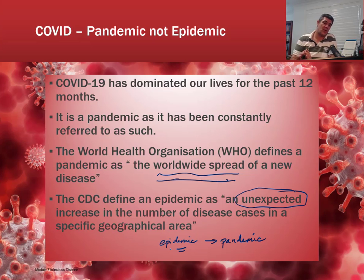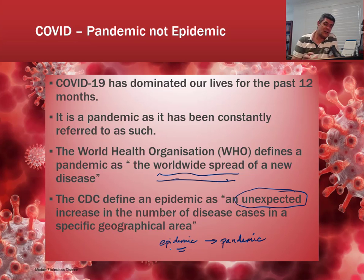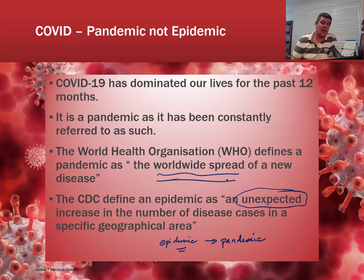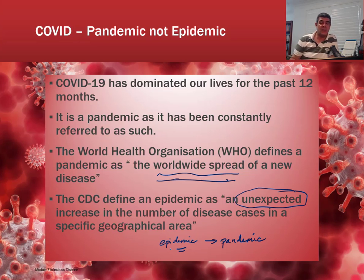If COVID hadn't been so global, we could regard outbreaks like the Northern Beaches and Burrell cluster, and the outbreaks in Melbourne, as epidemics in their local regions. In Australia, our numbers have been really good — we haven't had massive outbreaks. We've contained it, taken steps to protect our population, and responded very fast. The key distinction is: pandemic is global, epidemic is local.